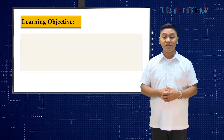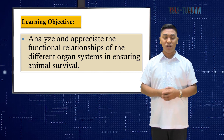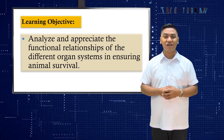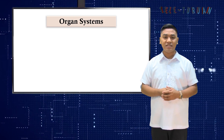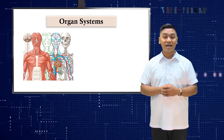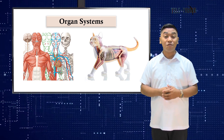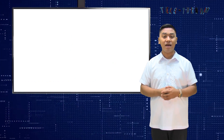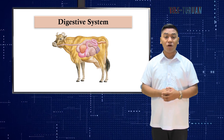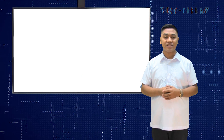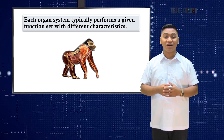After the lesson, you are expected to analyze and appreciate the functional relationships of different organ systems in ensuring animal survival. Last time, we became familiar with many of the organ systems that comprise the body of advanced animals such as circulatory, nervous, and so on. Most organs have functions in only one organ system such as the digestive system, which are collections of organs that perform a major function for the organism. Each organ system typically performs a given function set with different characteristics.